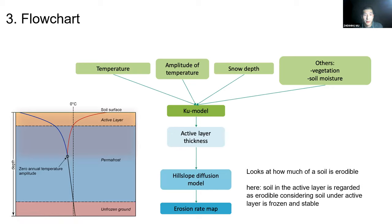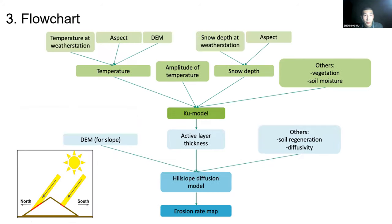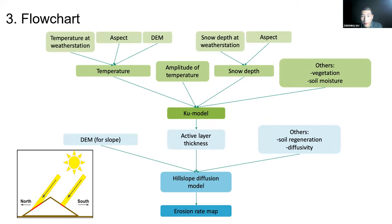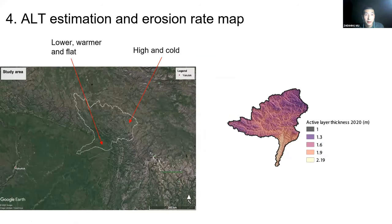After getting the active layer thickness from the Q-model, we input it into the diffusion model. The main question is how much soil is erodible over the permafrost region. The structure of permafrost shows the top layer is the active layer, the middle is permafrost — generally frozen and quite stable. In the active layer, the diffuse layer is regarded as erodible. We also need a DEM and diffusivity as necessary parameters for the diffusion model.